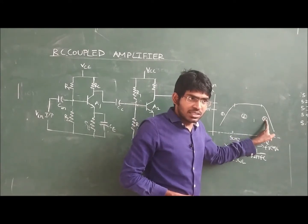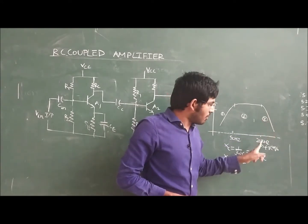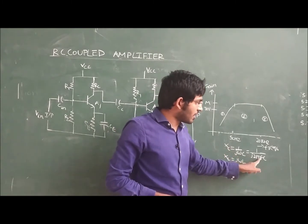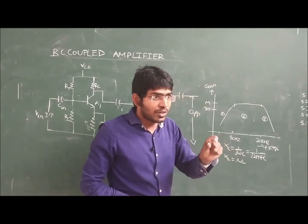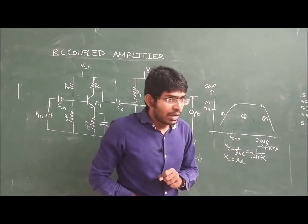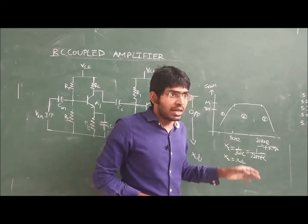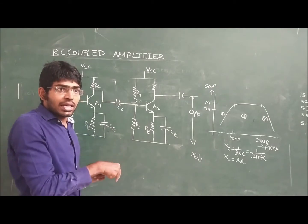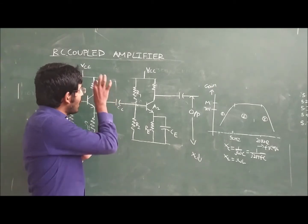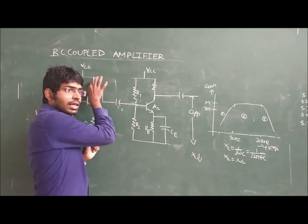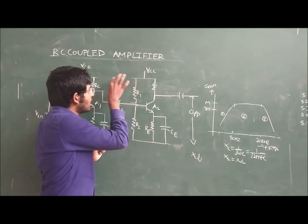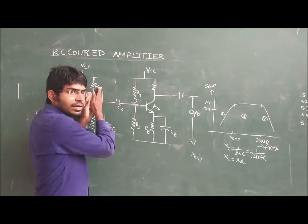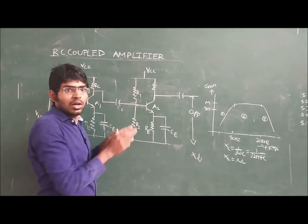At high frequencies, the Cc — whatever we are calling the coupling capacitor reactance — at high frequencies it is very small. At high frequencies, it is almost behaving like a short circuit. When it is behaving like a short circuit, the entire load Rc will become parallel to R1 — this loading effect is observed at R1.